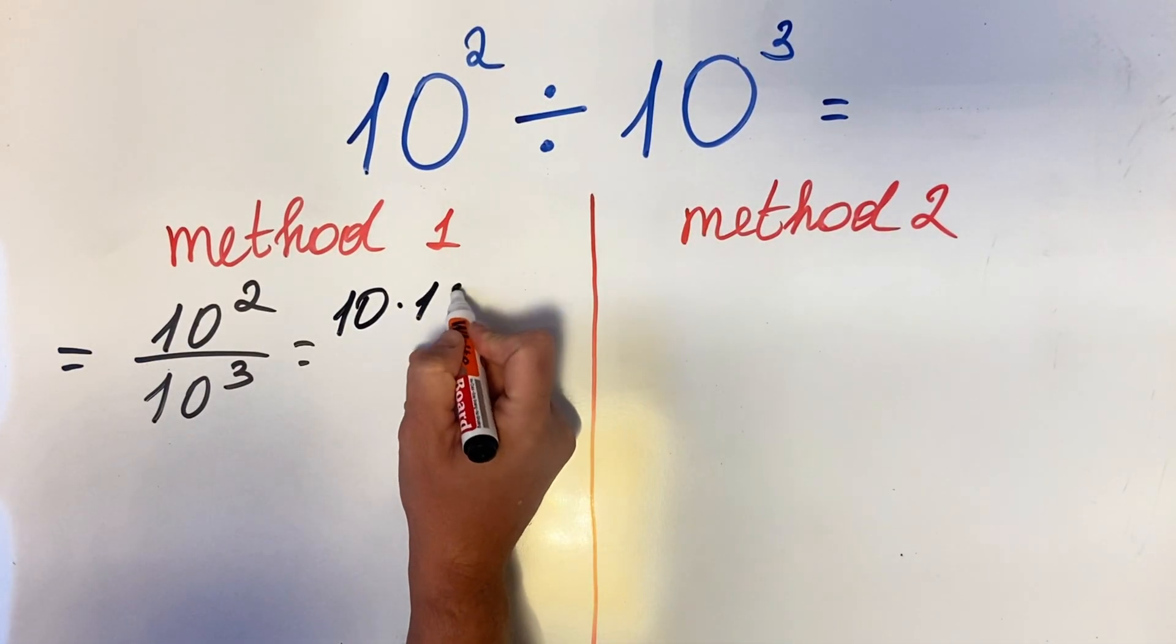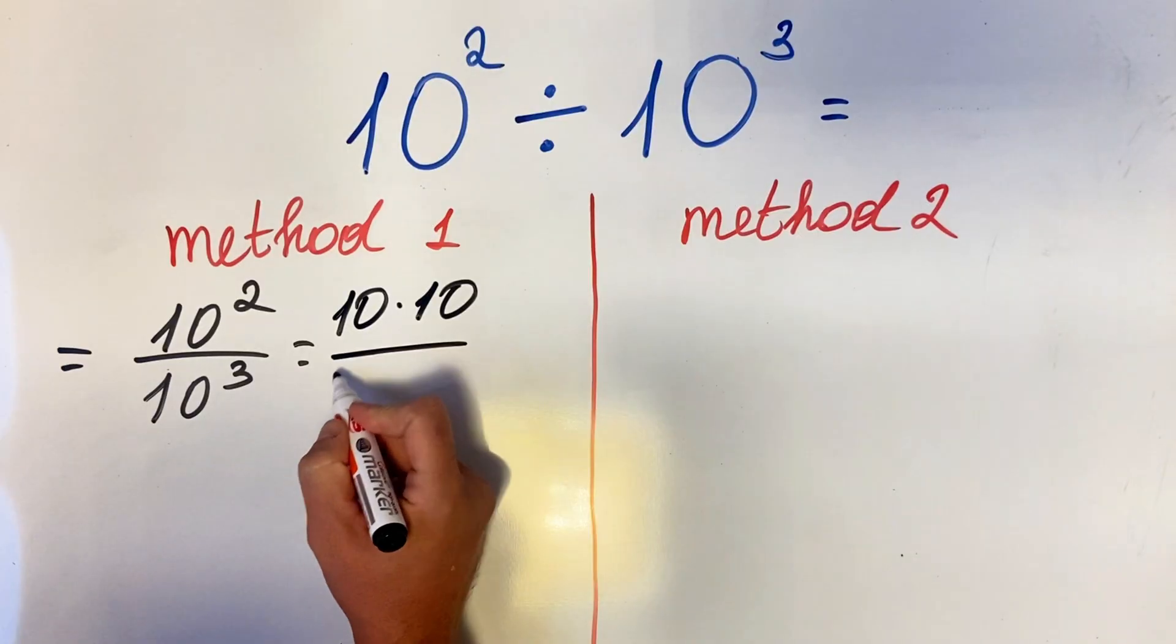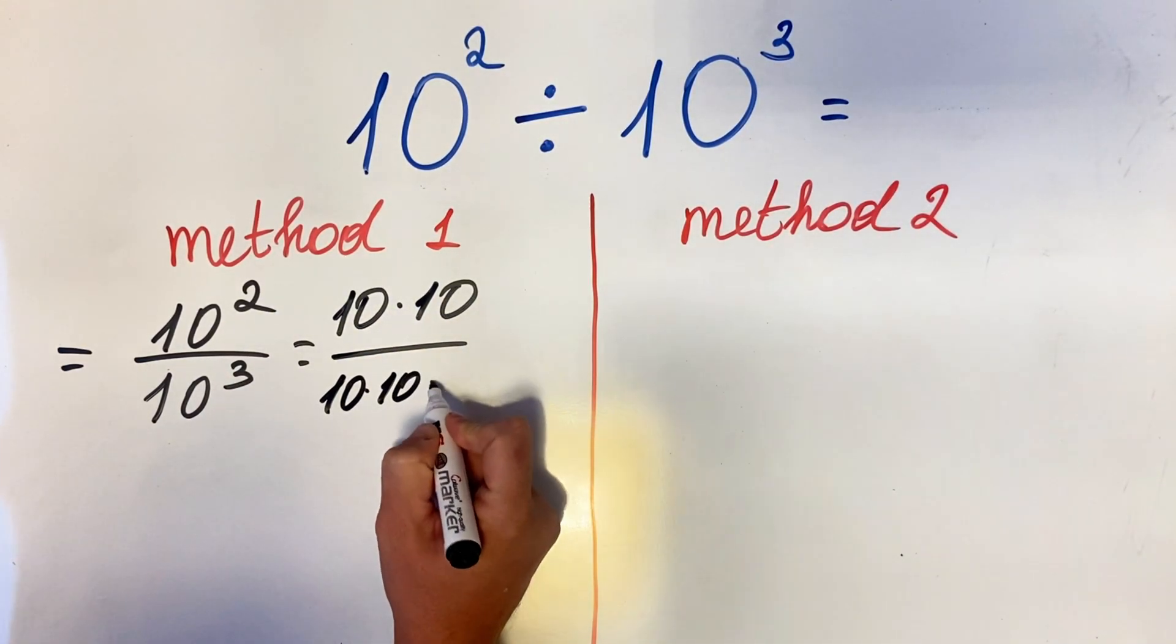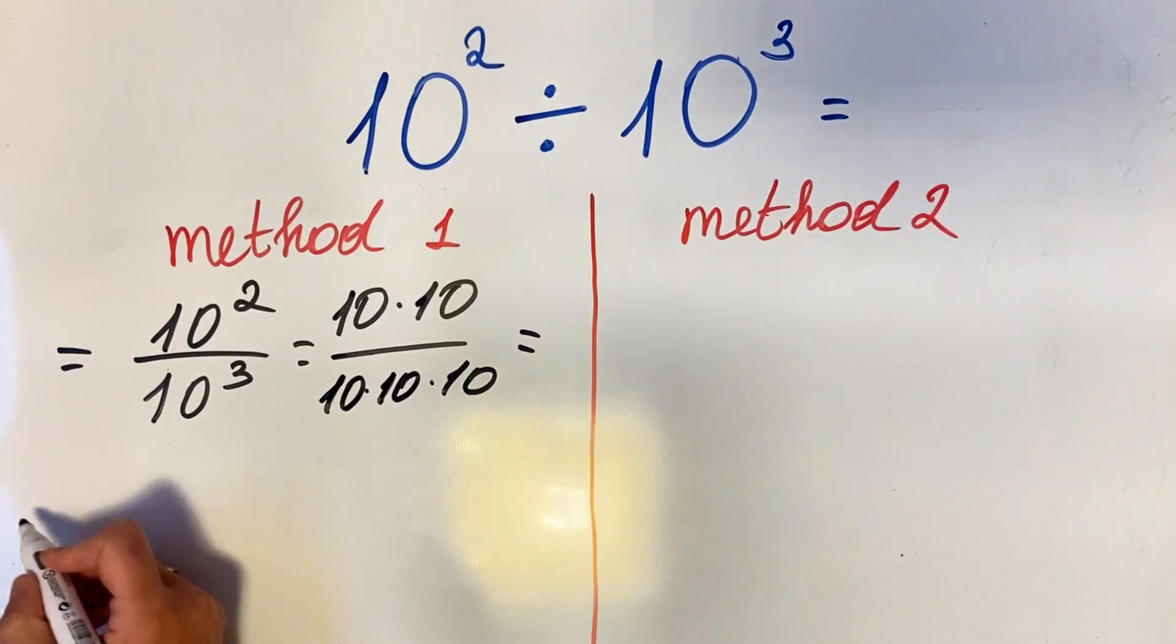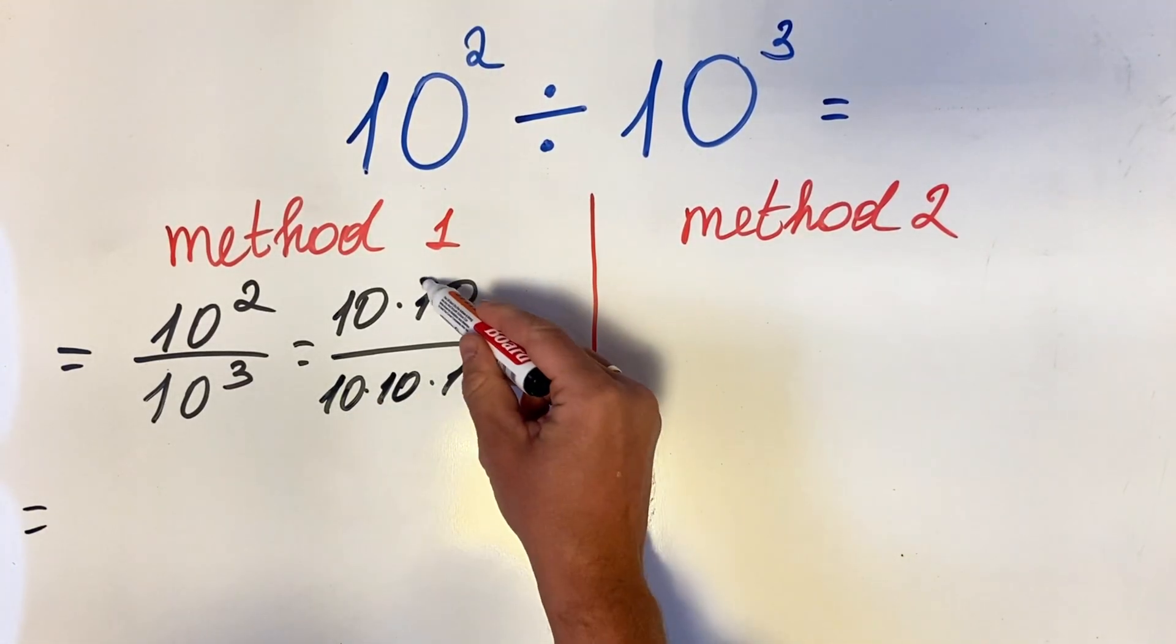In this case, pretty straightforward - we can simplify the tens. We can cancel them out, so we have one, then two, and what we get is